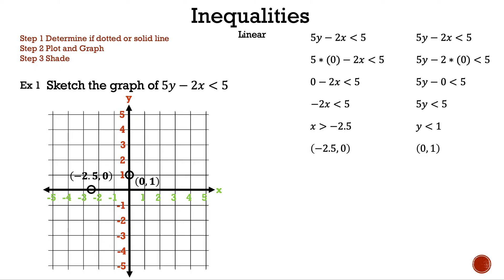Now we have two points. We can draw our line. Is it a dotted line or a solid line? It is a dotted line — for the same reason that the two points we used to draw this line are open circles, our line is a dotted line because we have less than.